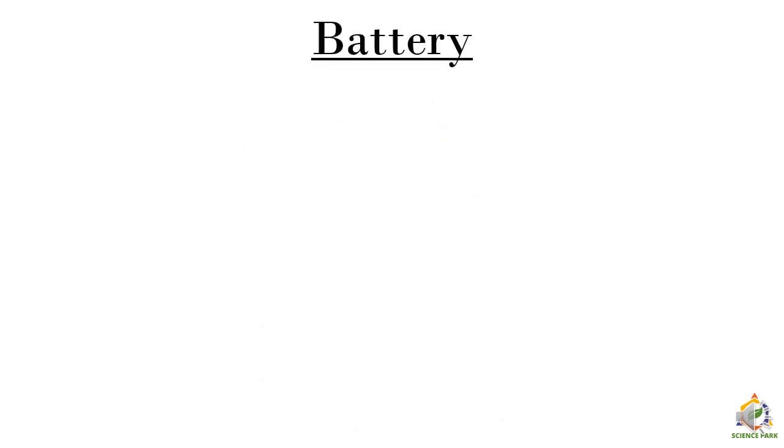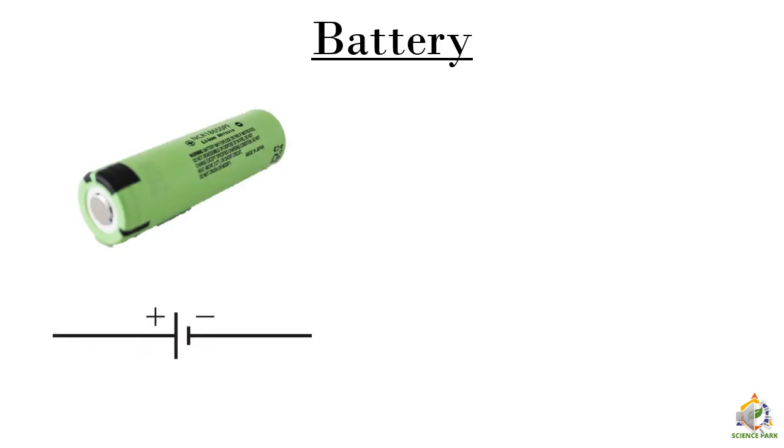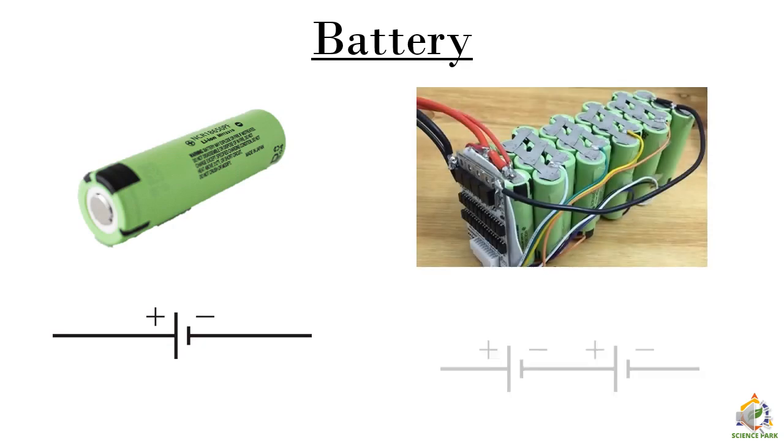Now we will learn about battery. As you know this is a cell, the symbol of which is shown below. Then what is battery? If we connect multiple cells together, it is called as a battery. One thing to remember here is when we connect two cells, we always connect the opposite terminals of them together. For example, if we have to connect two cells together to form a battery, we connect negative terminal of one cell to the positive terminal of another cell.